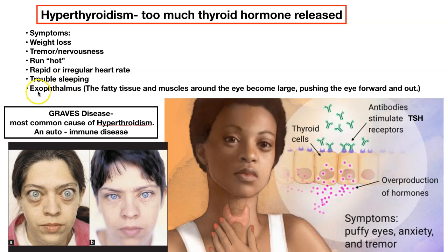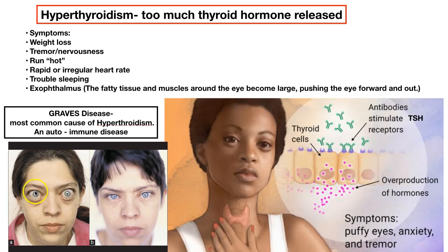Some people will develop exophthalmos — bulging eyes. What happens is we normally have fat on the back side of our eyes protecting them, but that fatty tissue gets very enlarged, pushing the eyeballs forward out of their socket a little bit. Here is a patient with hyperthyroidism showing that very prominently, and here is back to normal.